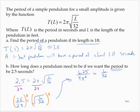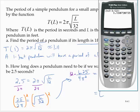Then to isolate the L, I'll multiply both sides by 32. So then we would have L equals 32 times 6.25 over quantity 4π squared.